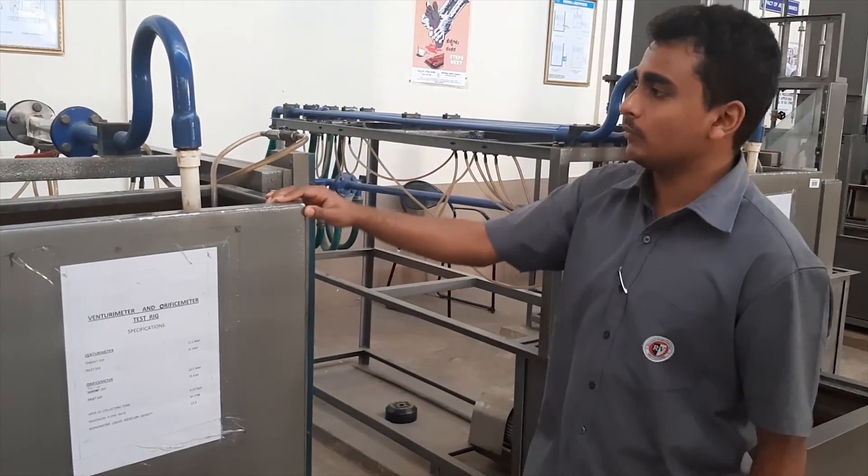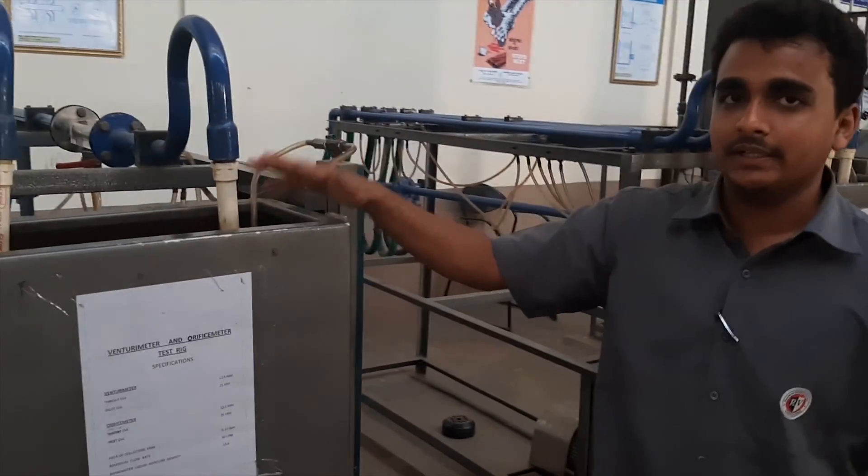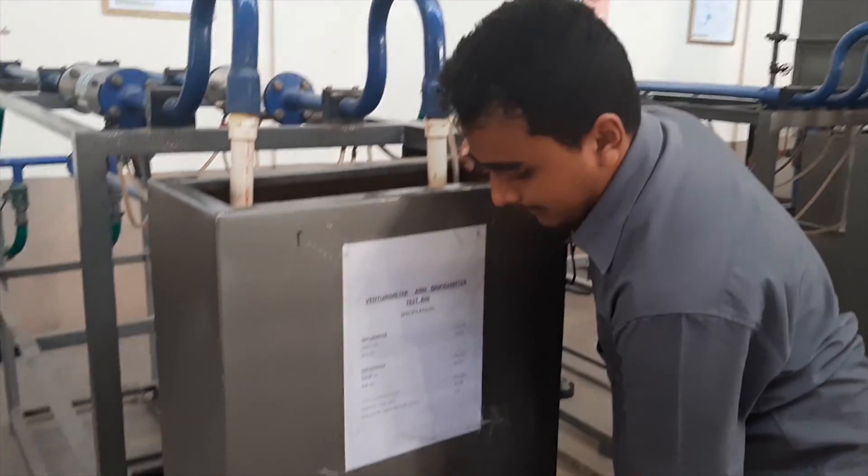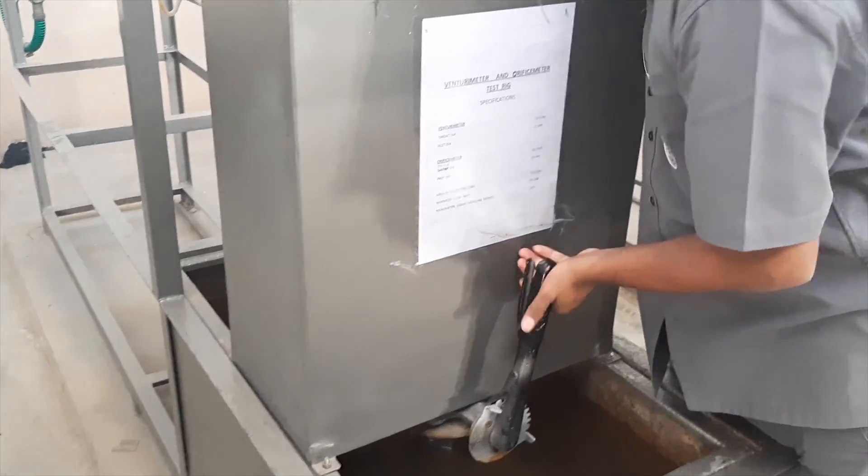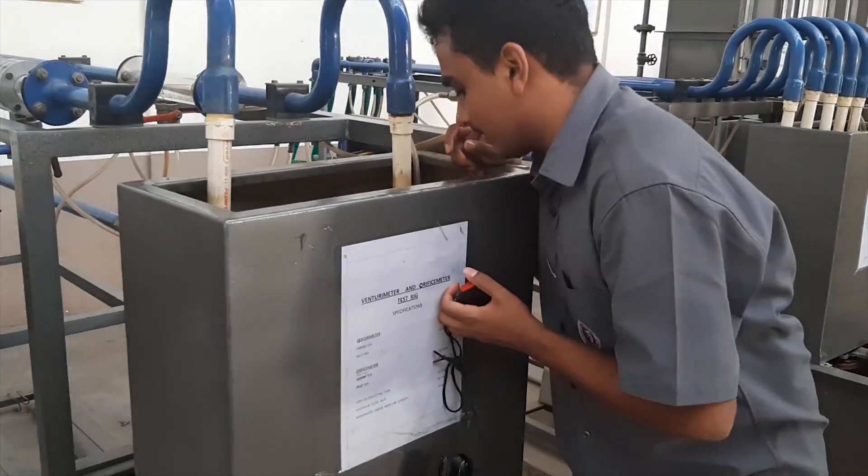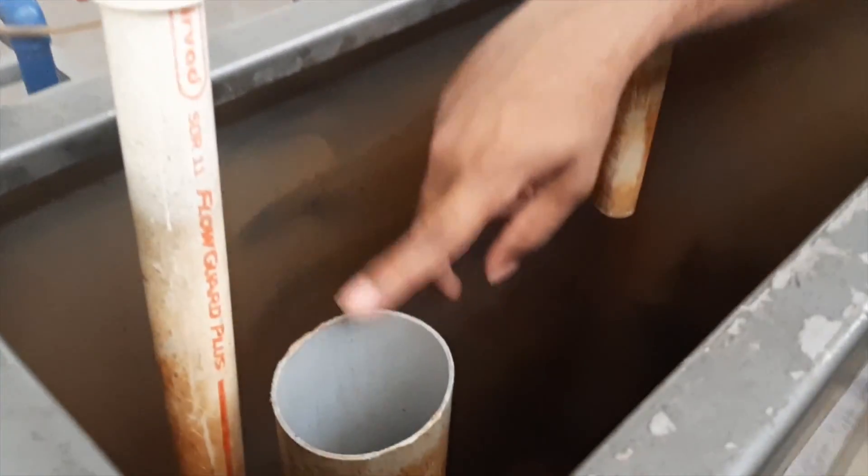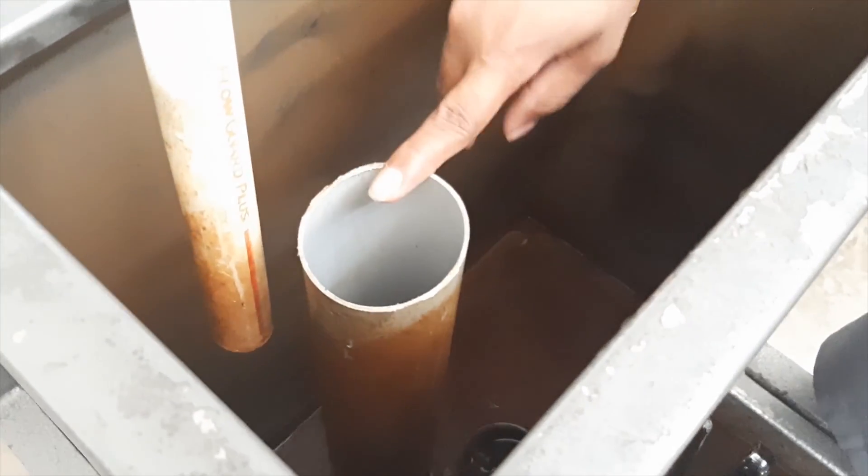This is the collecting tank where the water from the orifice meter or venturi meter enters. The water flows through the pipe inside the collecting tank and is closed with help of a butterfly valve. The tank is made such that when water crosses a certain level, it flows through this circular pipe, and the dimensions of the pipe are given in this chart.